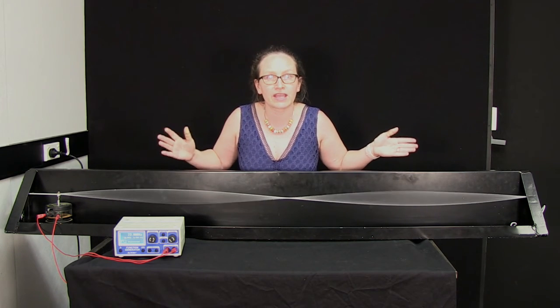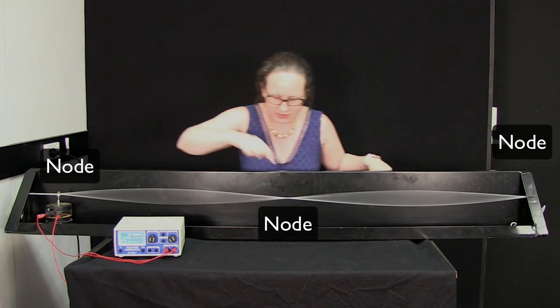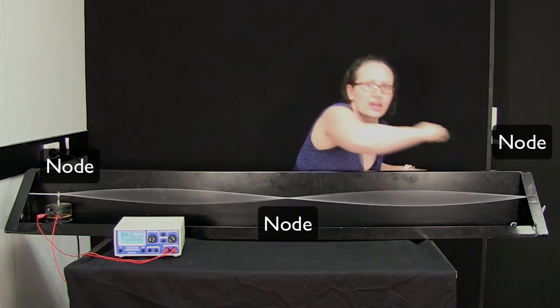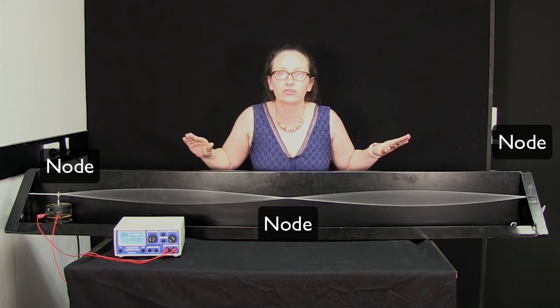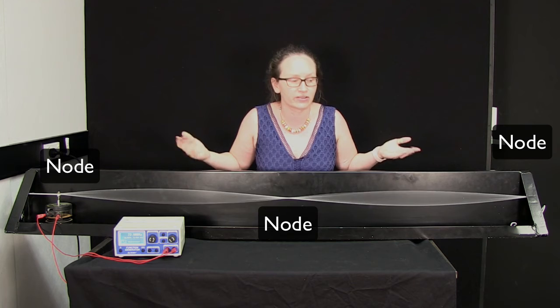You do need to know the names of some parts of a standing wave. These bits where the string is stationary are known as nodes. They're the places where the amplitude of the motion is zero.